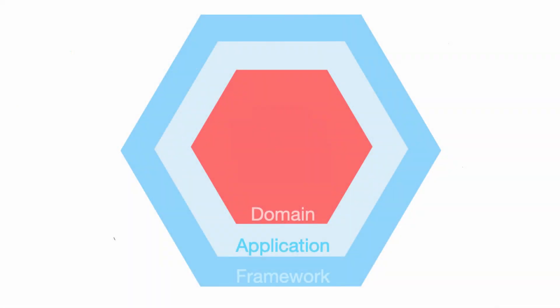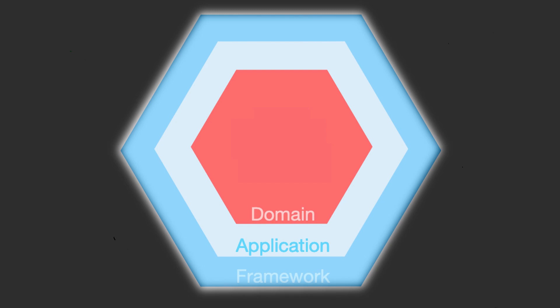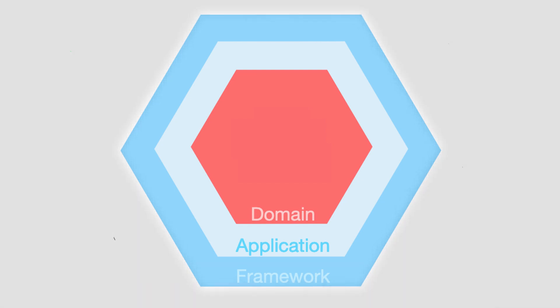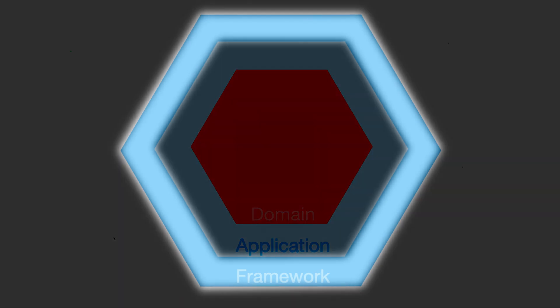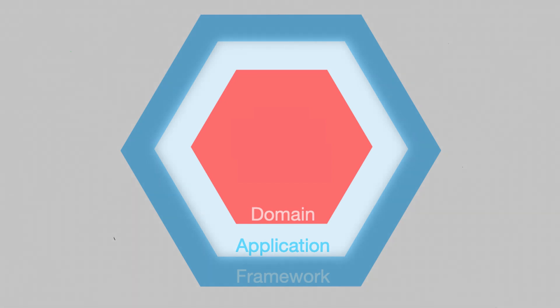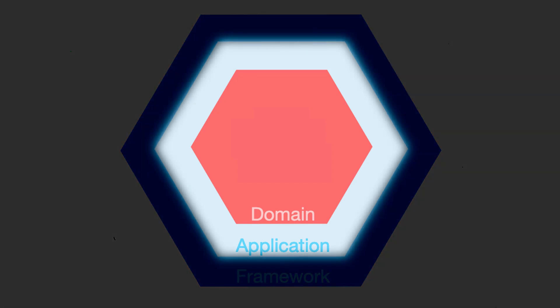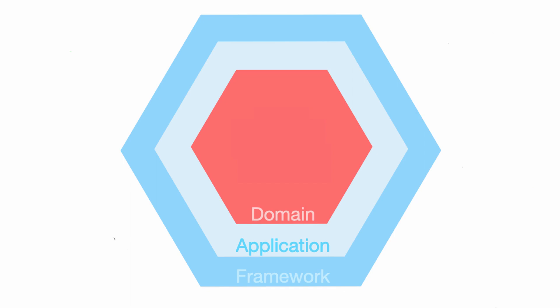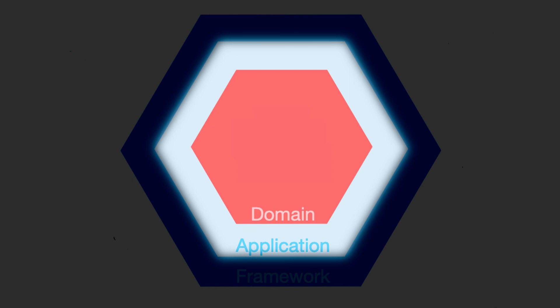In my previous explanation I mentioned that the entire hexagon is the application, but that's actually wrong. The framework layer is actually where our adapters sit, and the application actually starts at the application layer — which is a very important distinction I did not make. The API port interface is a technology-neutral entry point to the application. This distinction is important because the actual application shouldn't contain frameworks to talk to real-world technology. The application or hexagon boundary should be the use case boundary with no technology framework code inside.